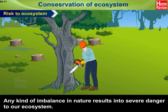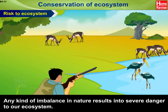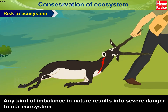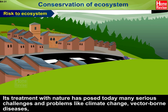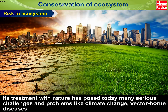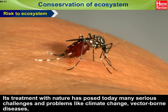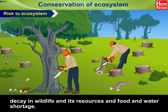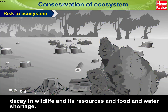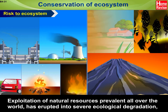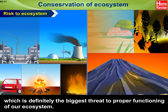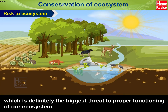Any kind of imbalance in nature results in severe danger to our ecosystem. This has posed many serious challenges and problems like climate change, vector-borne diseases, decay in wildlife and its resources, and food and water shortage. Exploitation of natural resources prevalent all over the world has erupted into severe ecological degradation, which is definitely the biggest threat to proper functioning of our ecosystem.